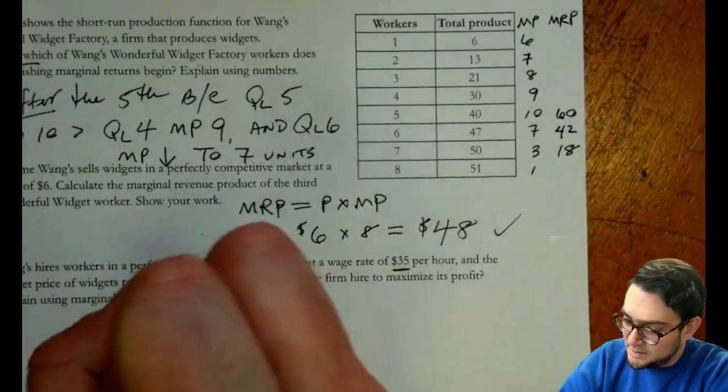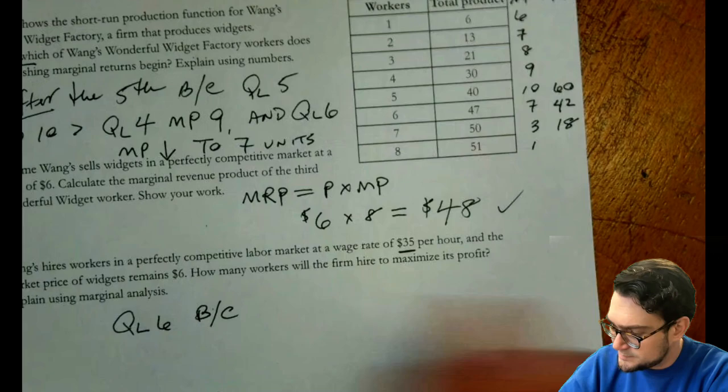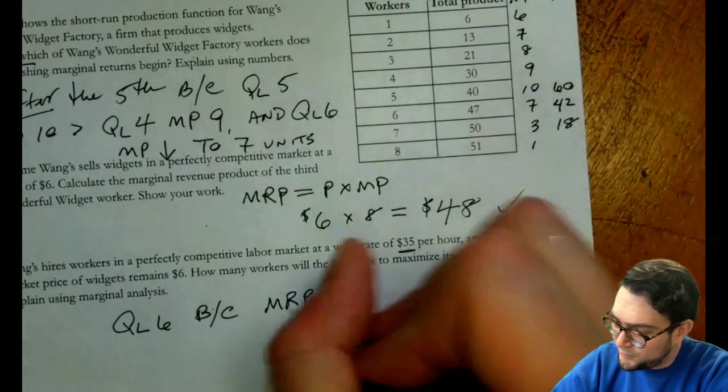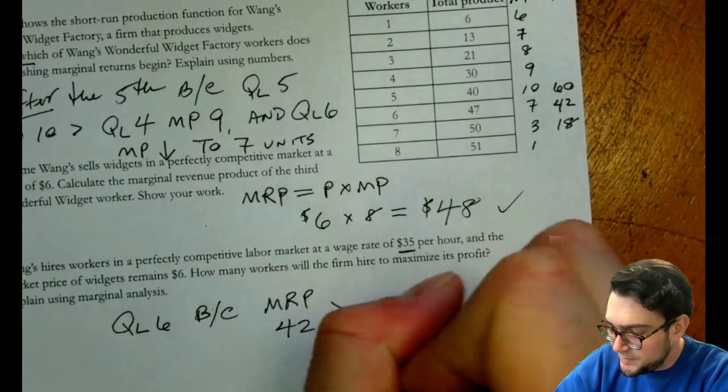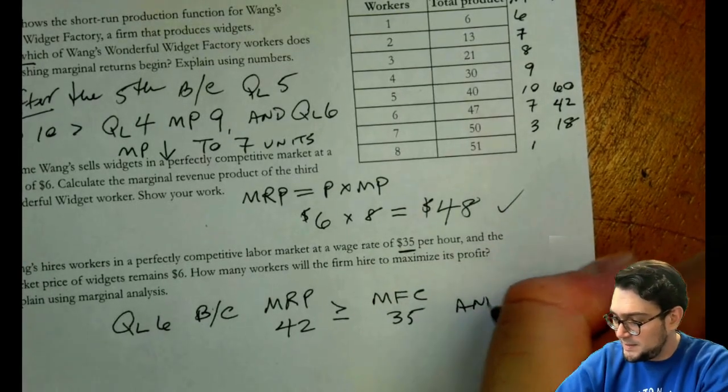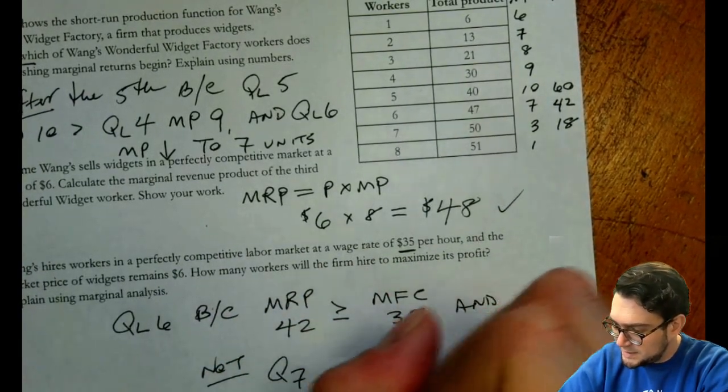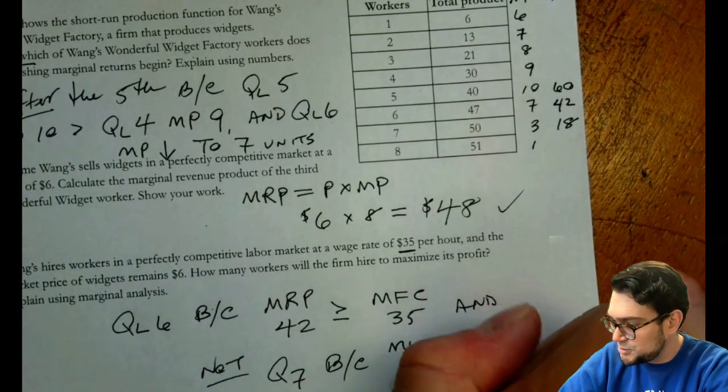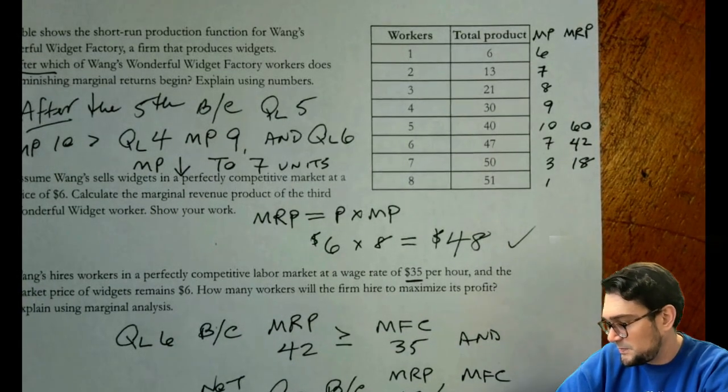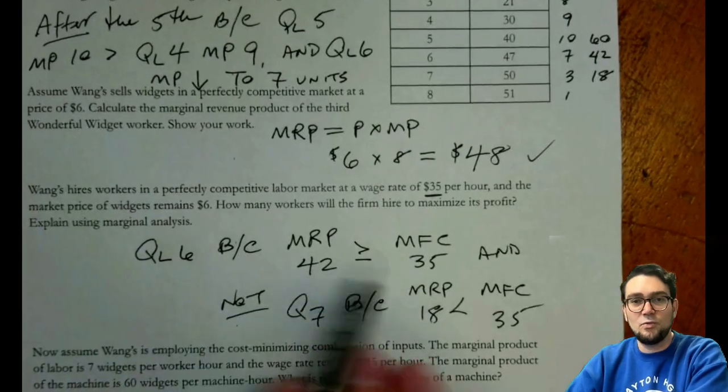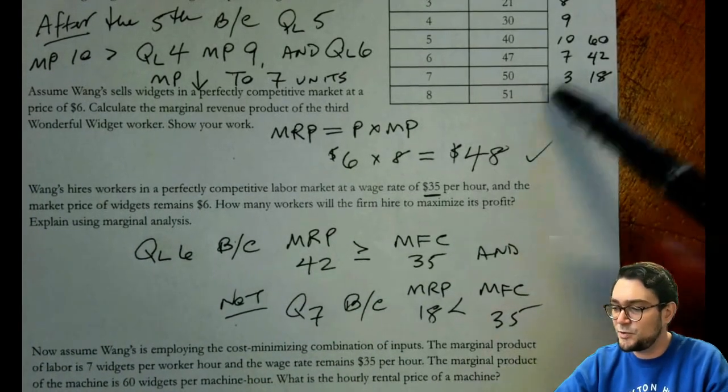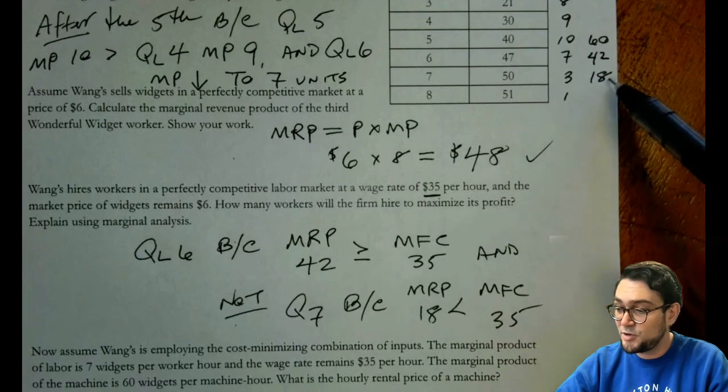But they will not hire the seventh worker. So we would say quantity of labor six because the marginal revenue product, 42, is greater than or equal to the marginal factor cost of 35. And not Q seven because the marginal revenue product 18 is less than the marginal factor cost 35. So we're going to say here why, because these are not equal values, right? We want them to be equal, but they're not. And so we wouldn't go ahead and hire the seventh worker because their marginal revenue product is only $18.